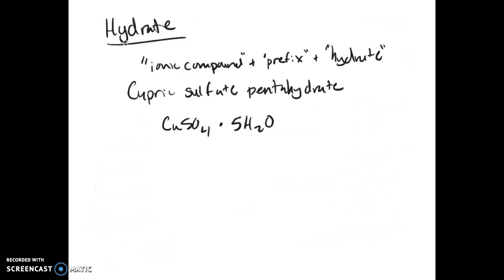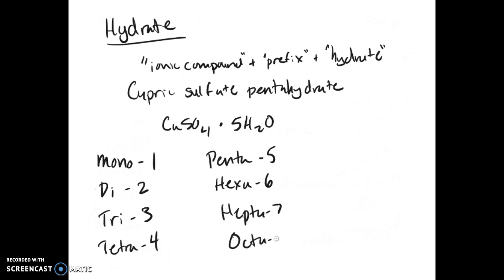Some things you do need to memorize for hydrates are the prefixes, and these are super critical to the rest of chemistry, because we use them all the time. Monohydrate means there's one water. Dihydrate is two. Tri is three. Tetra is four. Penta is five. Hexa is six. Hepta is seven. Octa is eight. Nona is nine. And deca is ten.